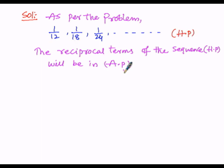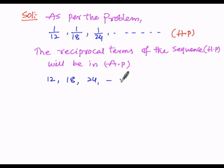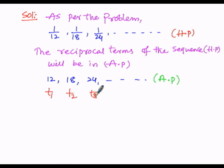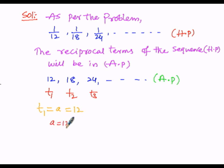Let us write the reciprocals: the reciprocal of 1/12 is 12, the reciprocal of 1/18 is 18, and the reciprocal of 1/24 is 24, and so on. This sequence 12, 18, 24 will be in arithmetic progression. So the first term a equals 12.